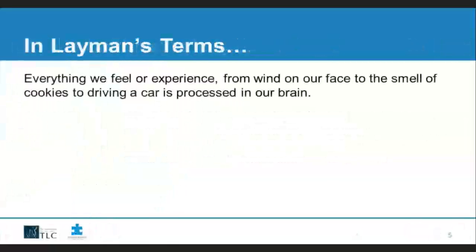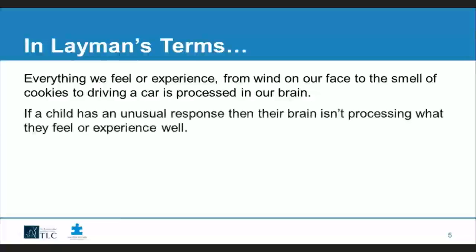In more layman's terms, sensory processing is everything we feel or experience — the wind blowing on our face, the smell of cookies baking, even driving a car. All those sensations are processed in our brain, giving meaning to what's experienced by sifting through information and selecting what to focus on — like listening to a teacher — and what to ignore, like traffic outside the window. If a child has an unusual response, their brain isn't processing what they feel or experience well, and this interferes with many aspects of a person's life.